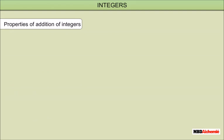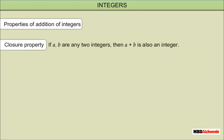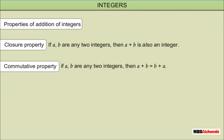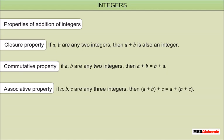Properties of addition of integers. Closure property: if A and B are any two integers, then A plus B is also an integer. Commutative property: if A and B are any two integers, then A plus B equals B plus A. Associative property: if A, B, C are any three integers, then A plus (B plus C) equals (A plus B) plus C.